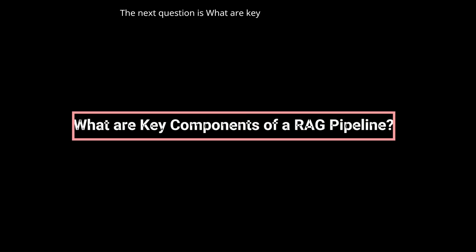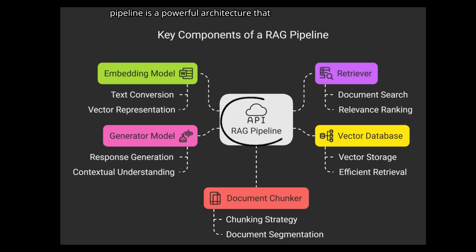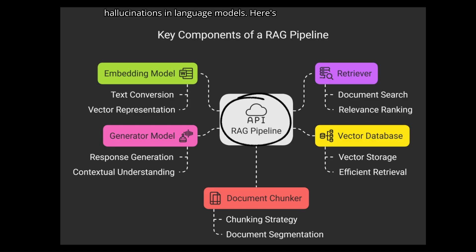The next question is: what are the key components of a RAG pipeline? The RAG pipeline is a powerful architecture that combines information retrieval with text generation to improve accuracy and reduce hallucinations in language models. Here's how it works, step by step.